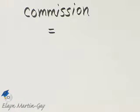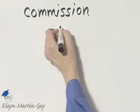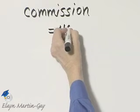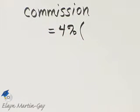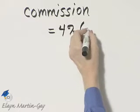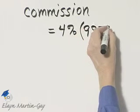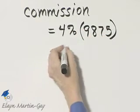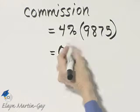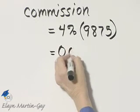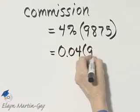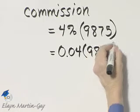So let's write down the commission rate. The commission rate is 4%, and we'll multiply it by the sales. The sales were $9,875. To find the commission, I'll write this percent as a decimal, and then we'll multiply.